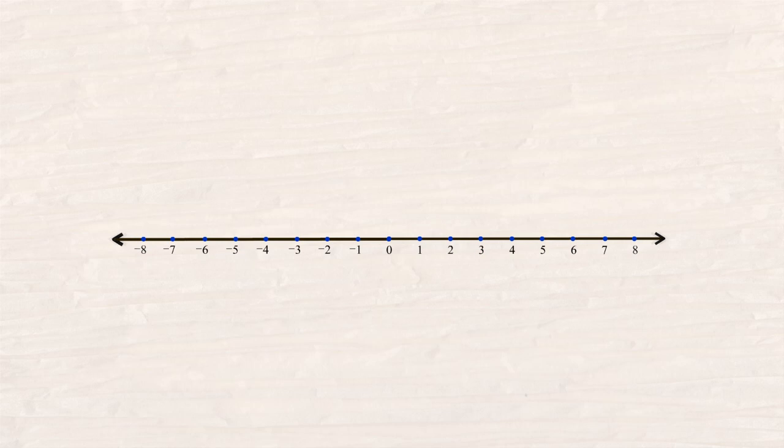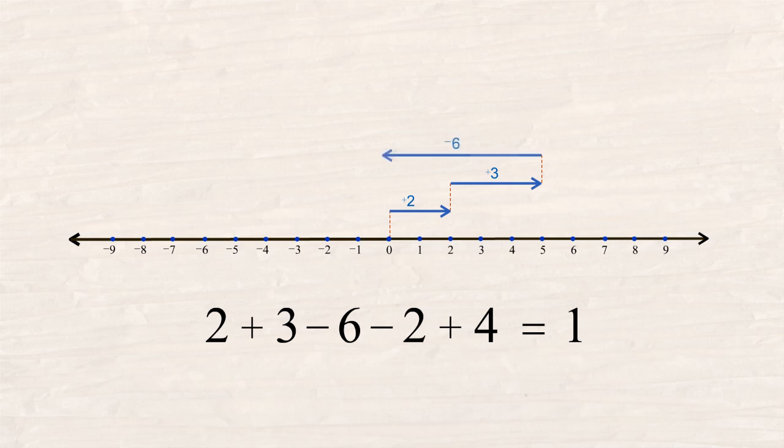Let's see what this looks like on a number line. As an example, we will take an addition problem involving positive and negative numbers. Let's start at the origin and add positive two, plus positive three, plus negative six, plus negative two, plus positive four. This all totals up to one.